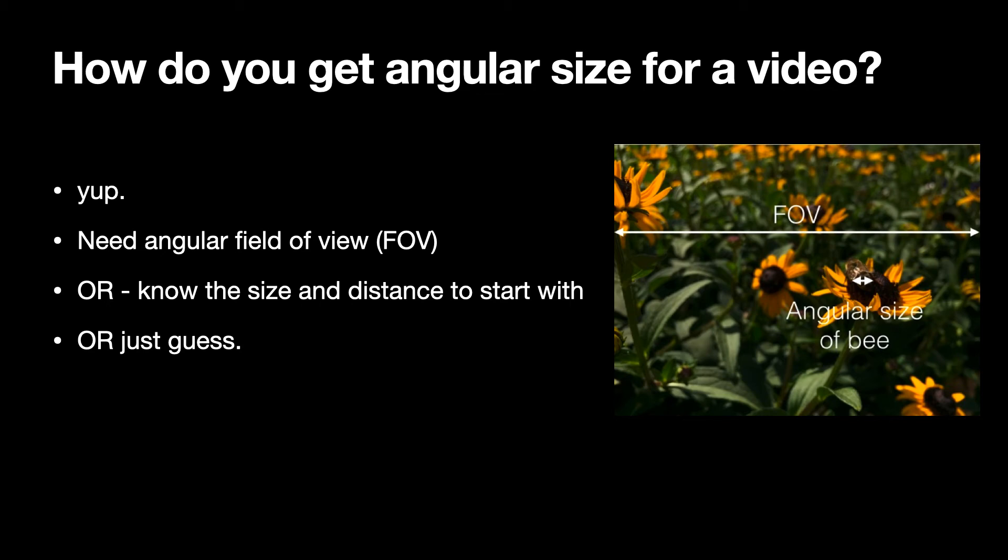And of course, just guessing is always an option. Okay. So what I did was I guessed that it was a Kentucky Fried Chicken Bucket of 0.2 meter diameter. And then I approximated the initial distance to find the field of view. And then found the angular size for every other frame after that. And here's what I get.